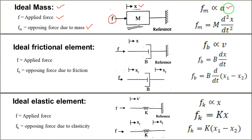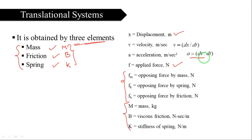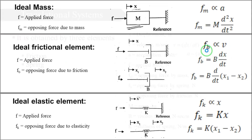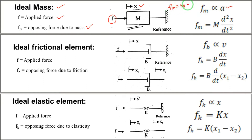F_M is directly proportional to acceleration. Acceleration a equals dv/dt, where velocity v equals dx/dt. Therefore, a equals d²x/dt². So F_M equals mass constant M multiplied by acceleration, which in terms of displacement is: F_M = M · d²x/dt².